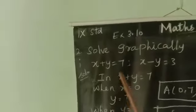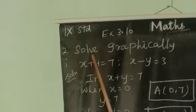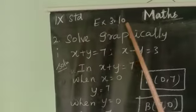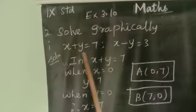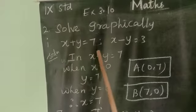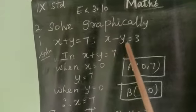So first, now we see the second sum in exercise 3.10. Solve graphically, x plus y is equal to 7, x minus y is equal to 3.